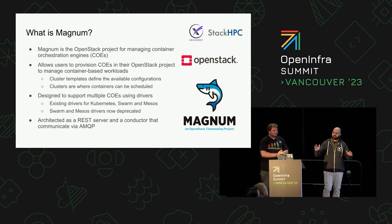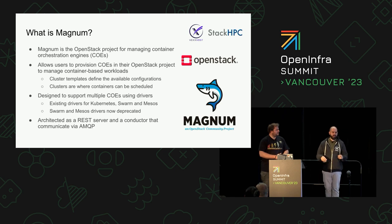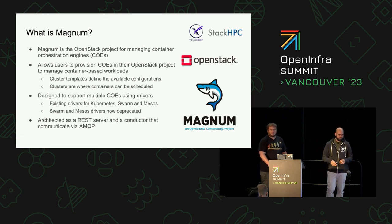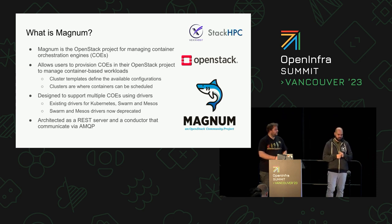Most of you guys will know about Magnum, so I'll go very quickly for those that don't. Magnum is an OpenStack project to allow you to deploy what were initially called container orchestration engines. We lived in a world where Kubernetes wasn't the only thing — there was Docker Swarm and Mesos and all these other things. But nowadays, Magnum is really for Kubernetes mostly.